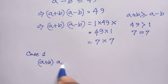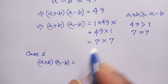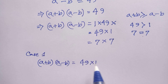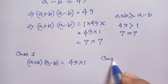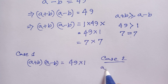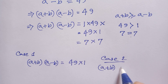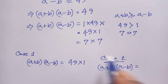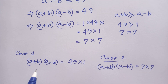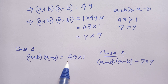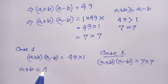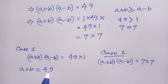We have two solutions. Case 1: a plus b times a minus b equals 49 times 1. Case 2: a plus b times a minus b equals 7 times 7. For Case 1, comparing both sides, a plus b is equal to 49 — this is equation 1.